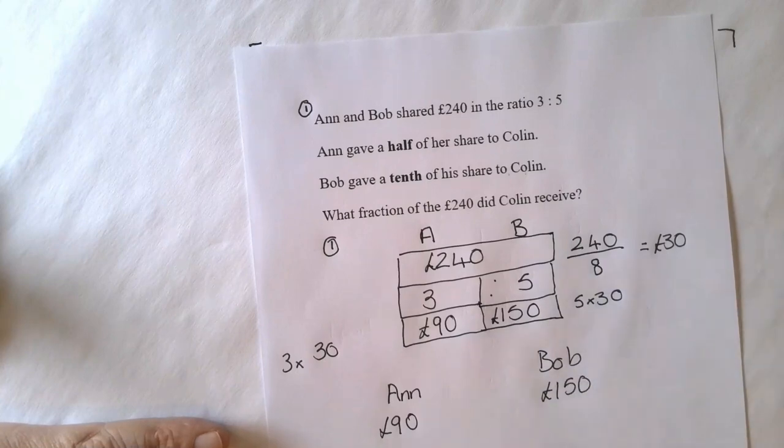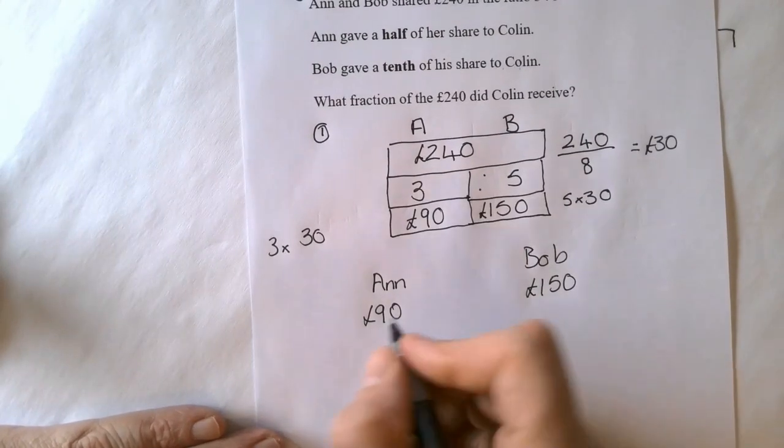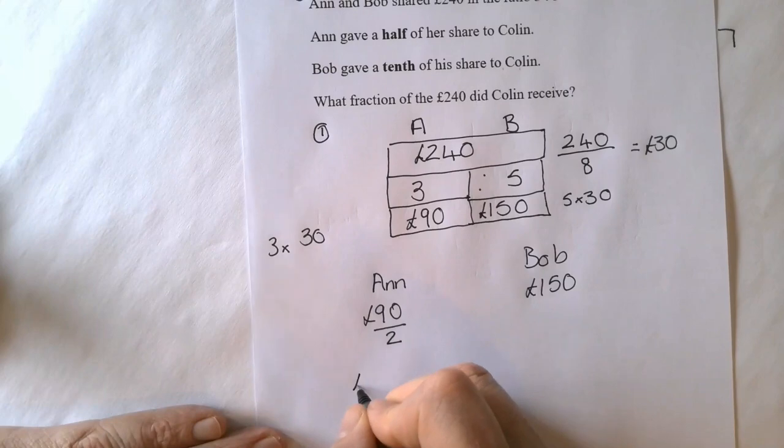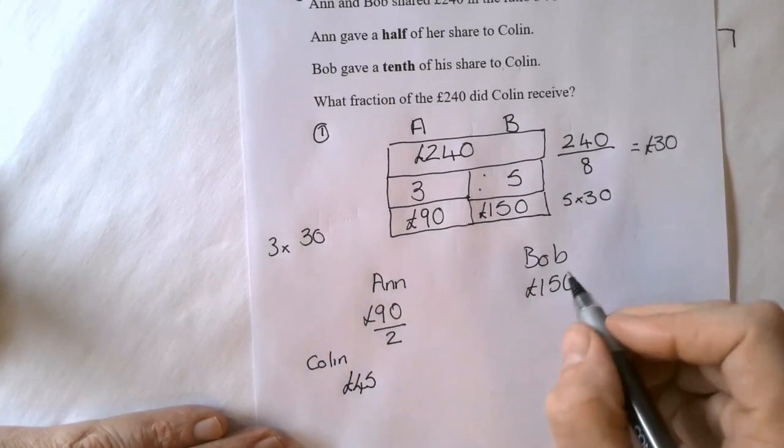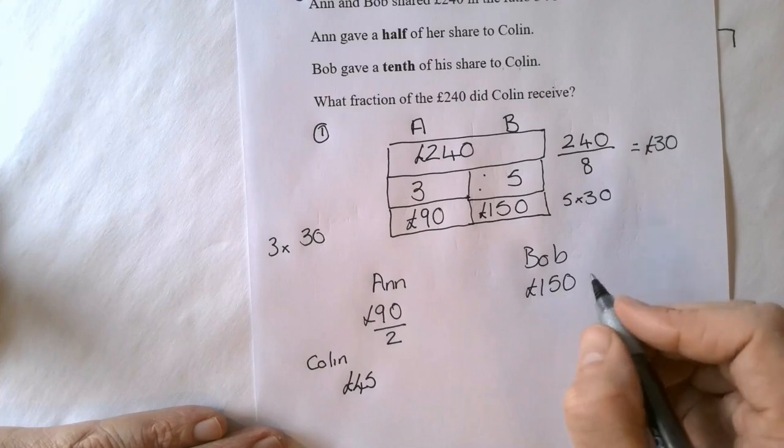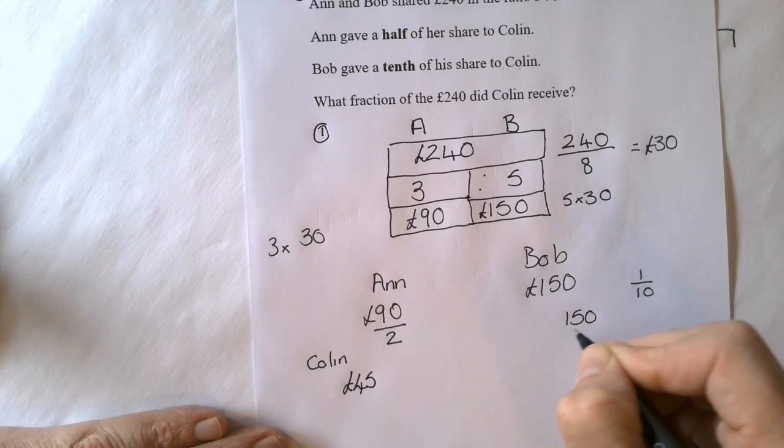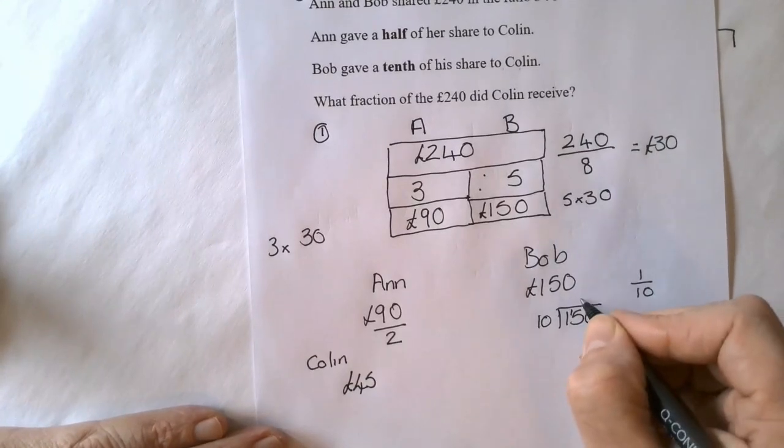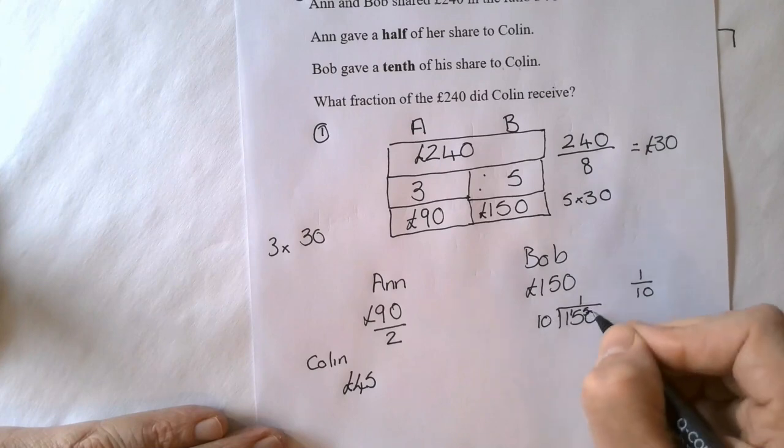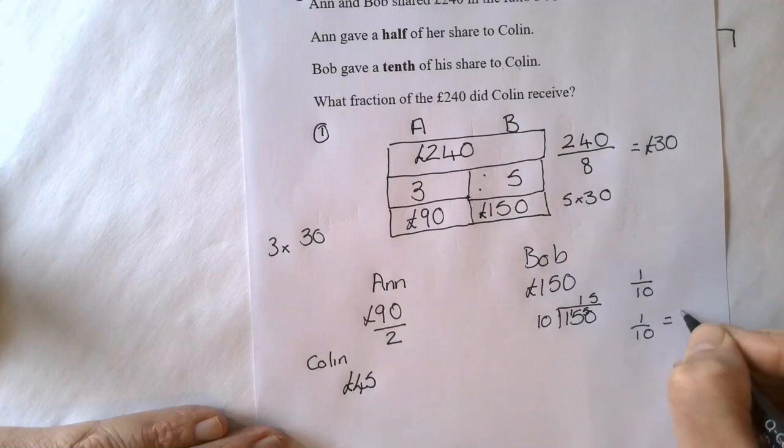Now I'll just move the question up a little bit. It states that Ann gave half the money to Colin. So to find half you would divide by 2 which would give 45 pounds. So Colin would get 45 pounds of Ann. And then Bob gives a tenth. So to find a tenth which is 1 over 10 you would do 150 divided by 10. 10's don't go into 1 but they go into 15 once with 5 left over. 10 goes into 50 five times. So 1 tenth equals 15 pounds.